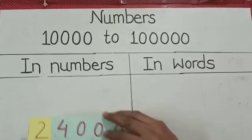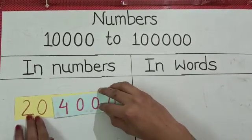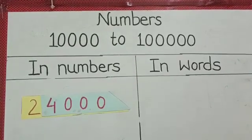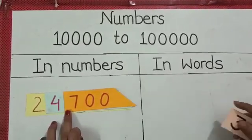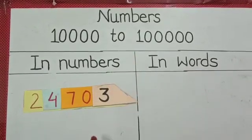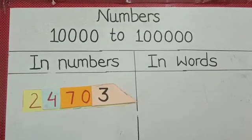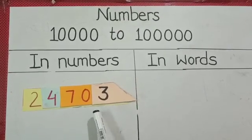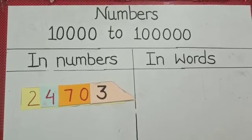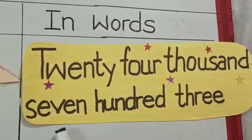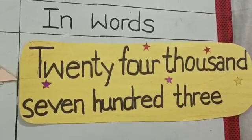Next, now 24,700. So now students, we have no digit at place of tens. So this numeral will be read as 24,703. And in words, twenty-four thousand seven hundred three.